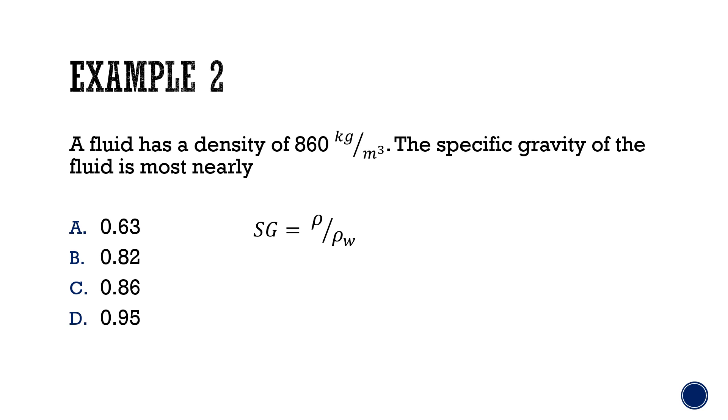We are given the density of the fluid which is 860 kilograms per meters cubed. We also know from available tables and lessons that I previously introduced that density of water is roughly 1000 kilograms per meters cubed. By dividing 860 by 1000, we calculate the specific gravity to be 0.86. We won't have any units since they cancel out, since it's considered a ratio. So the answer for this problem is C, 0.86.